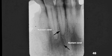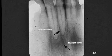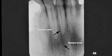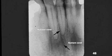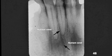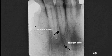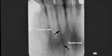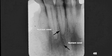Nutrient canals provide nerve and blood supply to the teeth and to the bone. They can be seen in any x-ray. This is a great example. If you look closely, you can see other nutrient canals on this slide.